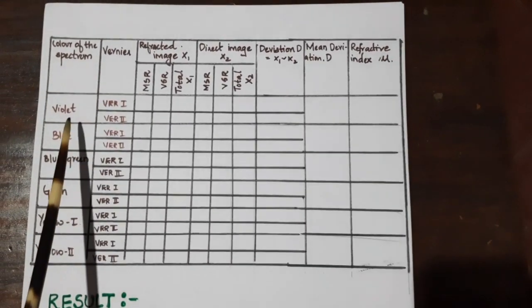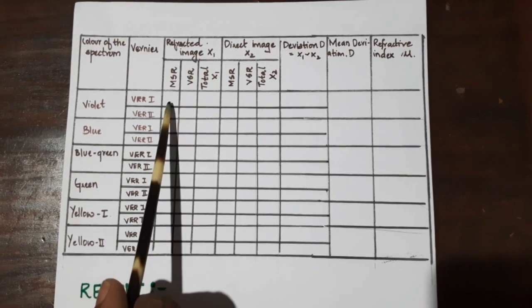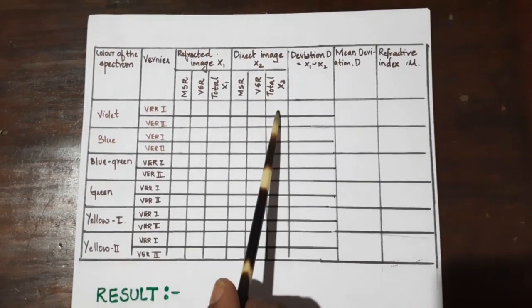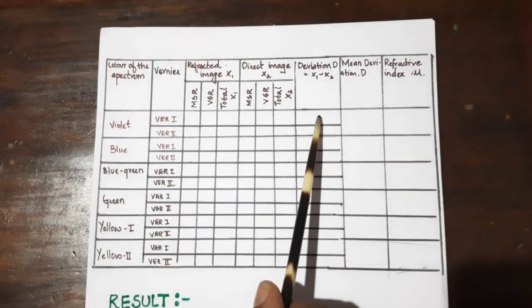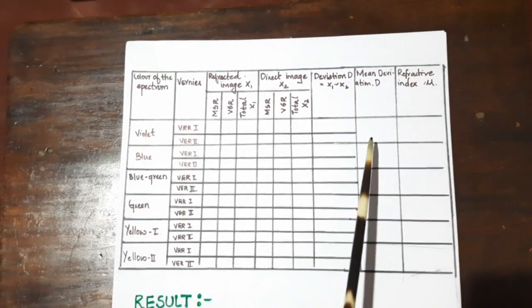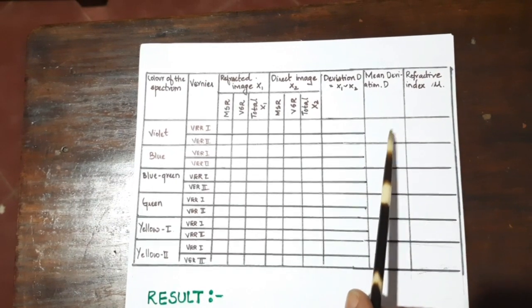Then take your Vernier 1 reading and Vernier 2 reading. So enter it in your tabular column for violet, Vernier 1 and Vernier 2. So these are the refracted MSR, VSR and total and this is the direct MSR, VSR and total. So the deviation, minimum deviation D would be difference between the two readings. And take the average of Vernier 1 and 2 and denote it as your final D.